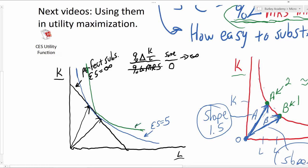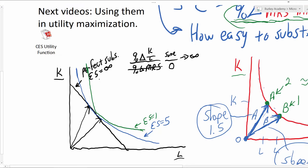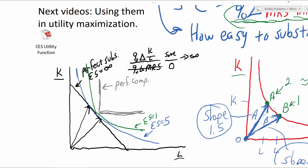So this might be an elasticity of substitution of one. You can tell what's going to happen as we get towards an elasticity of substitution of zero — that is when we have a Leontief production function, where it's perfectly a right angle. This would be perfect complements: fixed ratios of labor and capital needed. For example, for every shovel you need one person, or for every bulldozer you need three people. Perfect complements means the elasticity of substitution is zero — absolutely impossible to substitute between capital and labor.